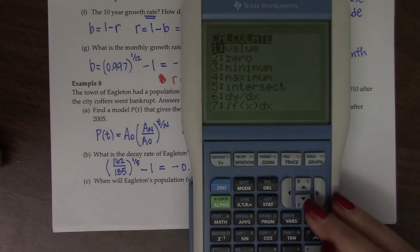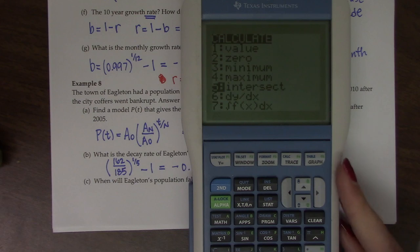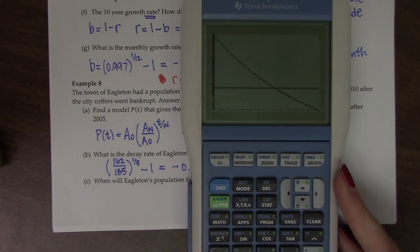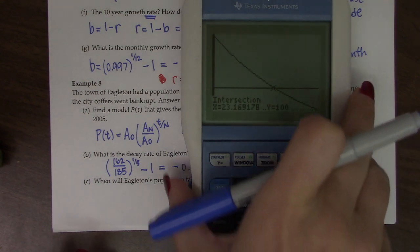So if I go to second calc intersect, there's the first curve. There's the second curve. Take a guess. And it's 23.169 years.